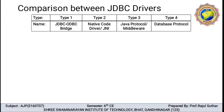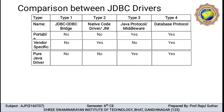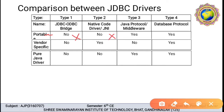Let me discuss the comparison between JDBC drivers. This is the summary. Type 1 driver is JDBC-ODBC bridge, type 2 is native code driver or Java Native API, type 3 driver is Java protocol or middleware, and type 4 is database protocol. Regarding portability: type 1 is not portable, type 2 is also not portable, but type 3 is portable and type 4 is also portable. Is type 1 driver vendor specific? No, it is not vendor specific. Type 2 is yes, vendor specific. Type 3 is not vendor specific, but type 4 is also vendor specific.